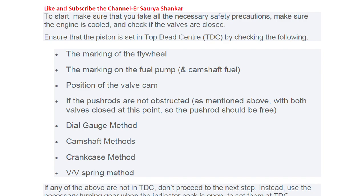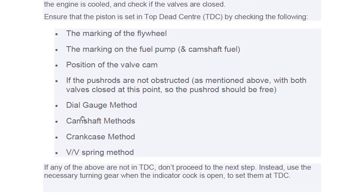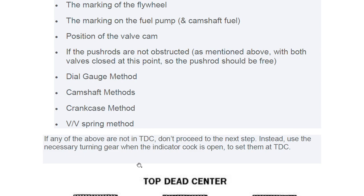The crankcase method involves opening the crankcase and visually checking whether the piston is going up or down. The valve spring method: if the flywheel shows two units at TDC, open the cylinder head cover — whichever valve's spring is loose is at TDC on the compression stroke. If any of the above checks do not confirm TDC, do not proceed to the next step.